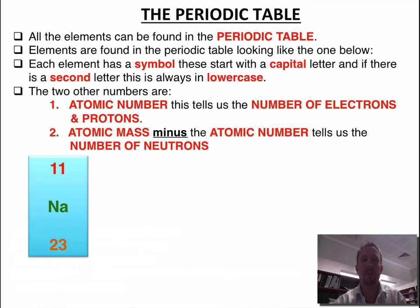So from this, by using these two numbers, we can work out the number of protons, the number of electrons, and the number of neutrons. So let's look at the example that we've got below. We've got the symbol sodium, which we know has the symbol Na.